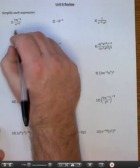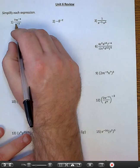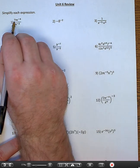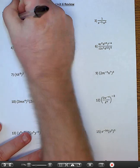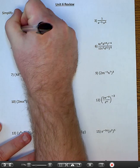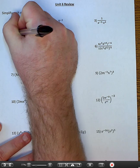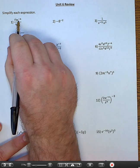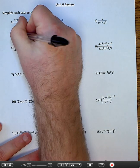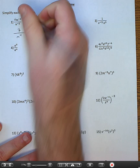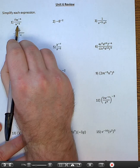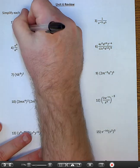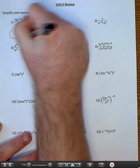Negative exponents is the key on number one. We want to get rid of the negative exponents. Seven has an exponent of one — it's happy on top, so I'm going to leave it where it's at. M is not happy on top, it goes to the bottom and becomes m to the fourth. N is not happy on the bottom, it goes to the top and becomes n squared. Done with that one.